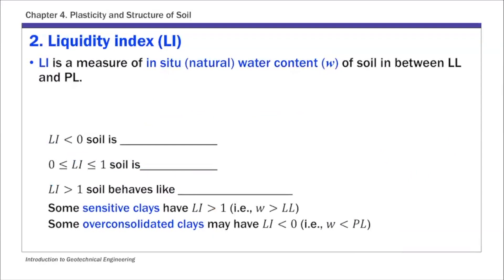The second index is called liquidity index. Liquidity index is a measure of in situ or natural water content of soil in between its liquid limit and plastic limit. This definition is similar to relative density, which measures the in situ void ratio in between E-min and E-max.